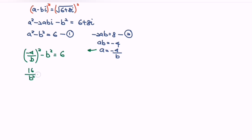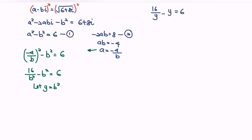This simplifies to 16 over b squared minus b squared equals 6. Now let y equal b squared, so we have 16 over y minus y equals 6. Multiply all terms by y and we get 16 minus y squared equals 6y.